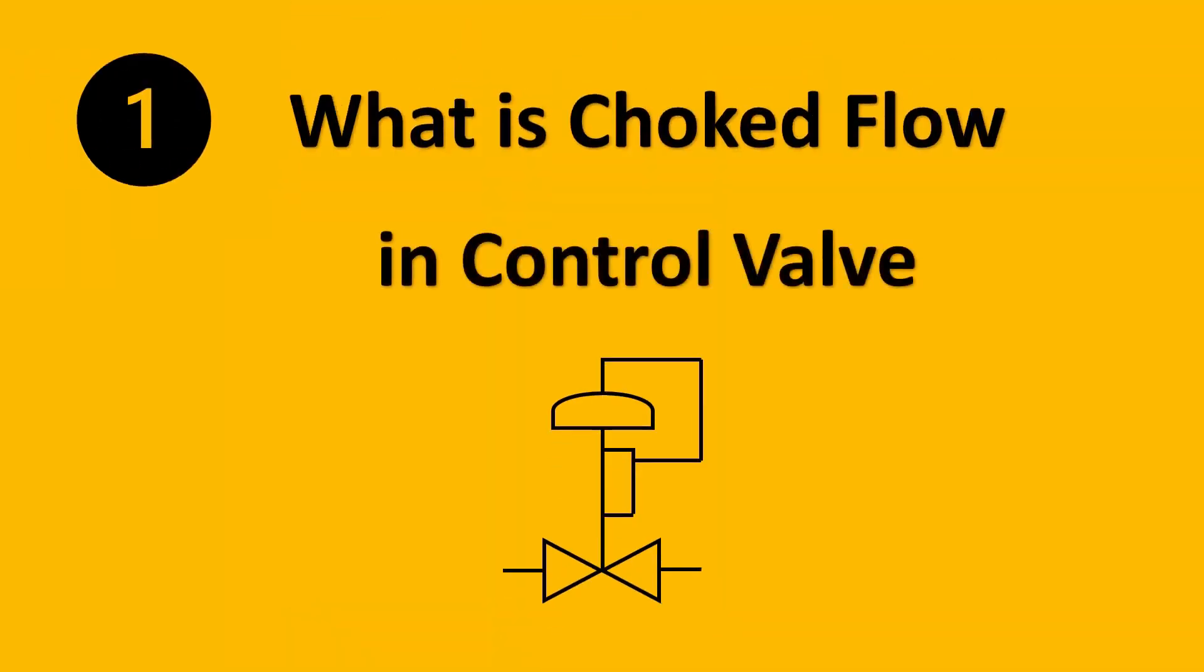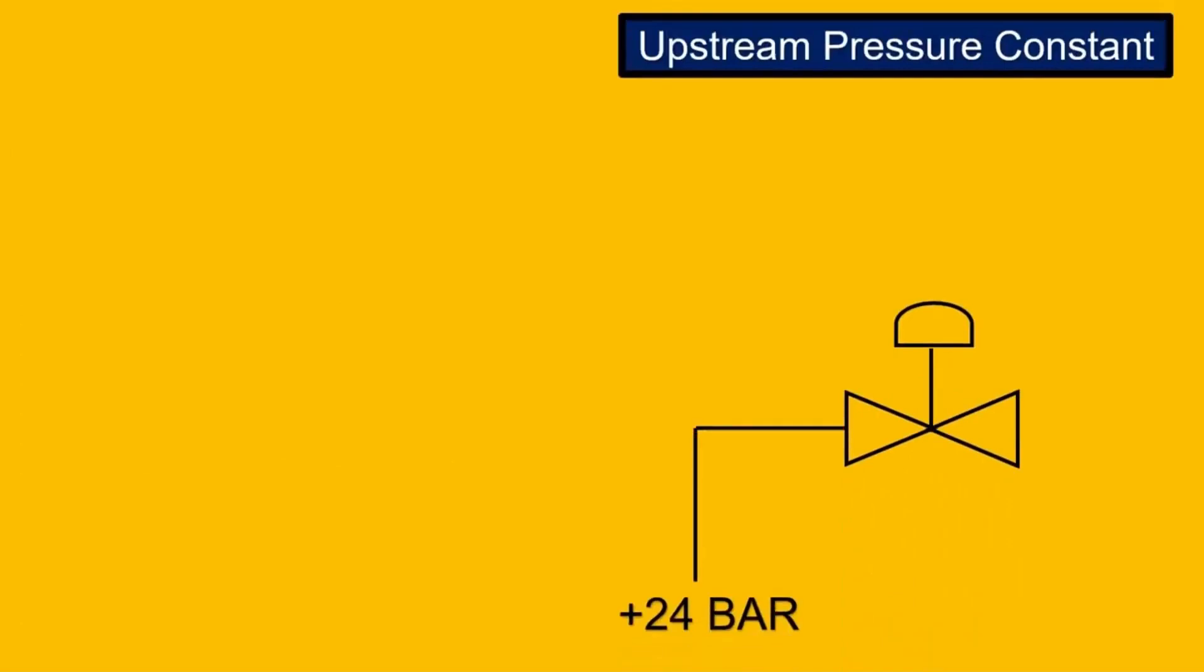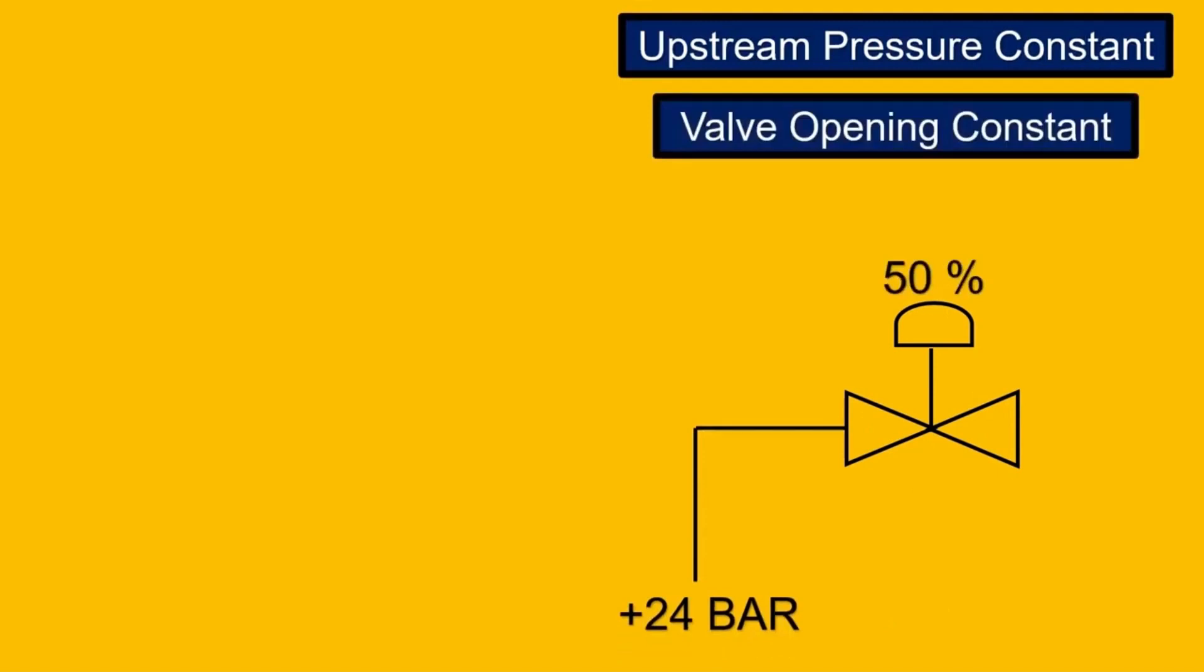The first asked control valve question is what is choke flow in a control valve. To understand this concept, we can say that if we have a valve and we keep the upstream pressure at 24 bar, so we keep a constant upstream pressure and the valve opening is kept constant.